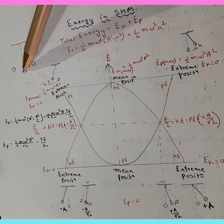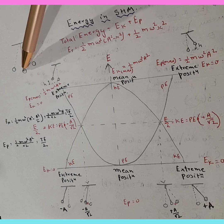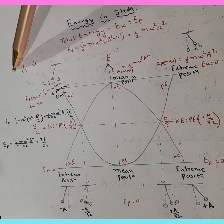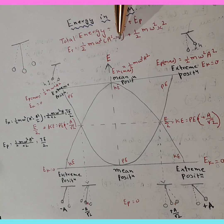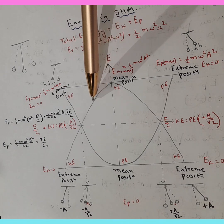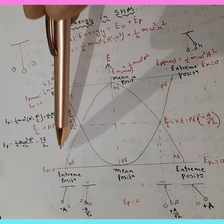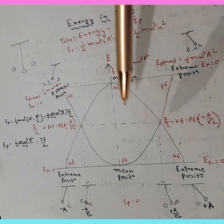Toward the negative side, the same story — kinetic energy keeps on decreasing moving toward negative amplitude (negative a). At the extreme position, x takes the value of amplitude, so a squared minus a squared equals 0, and the entire kinetic energy becomes 0. So E_k equals 0 at extreme position on both sides.